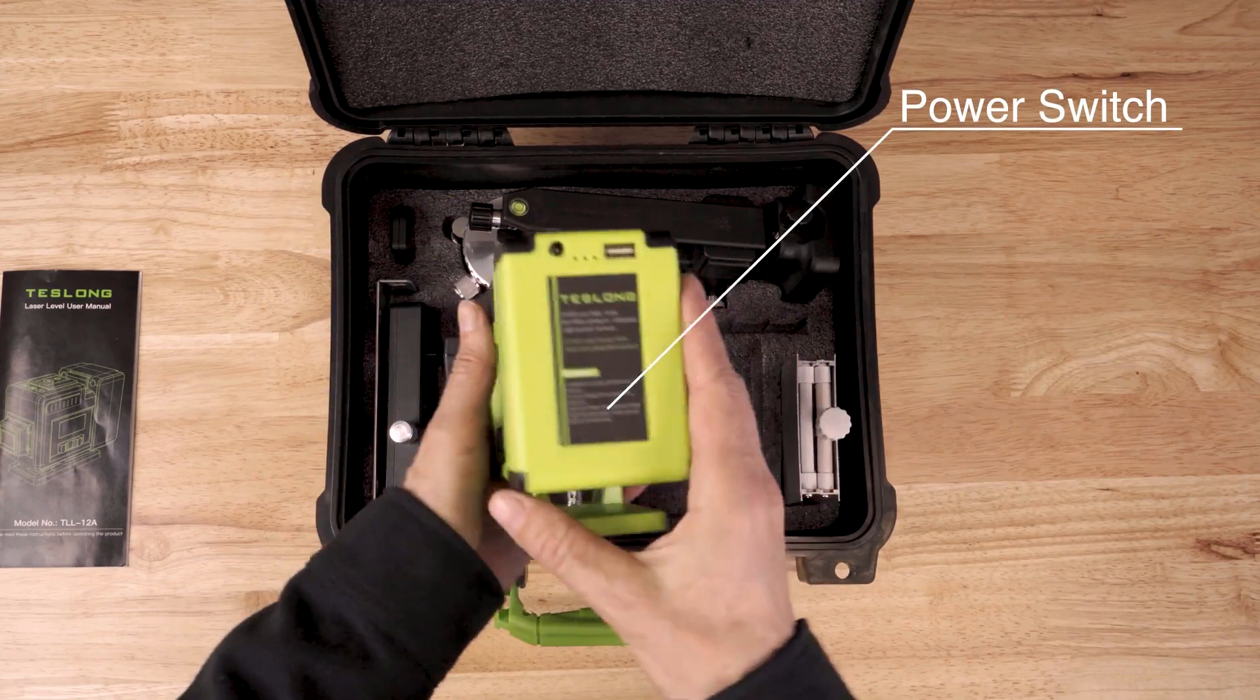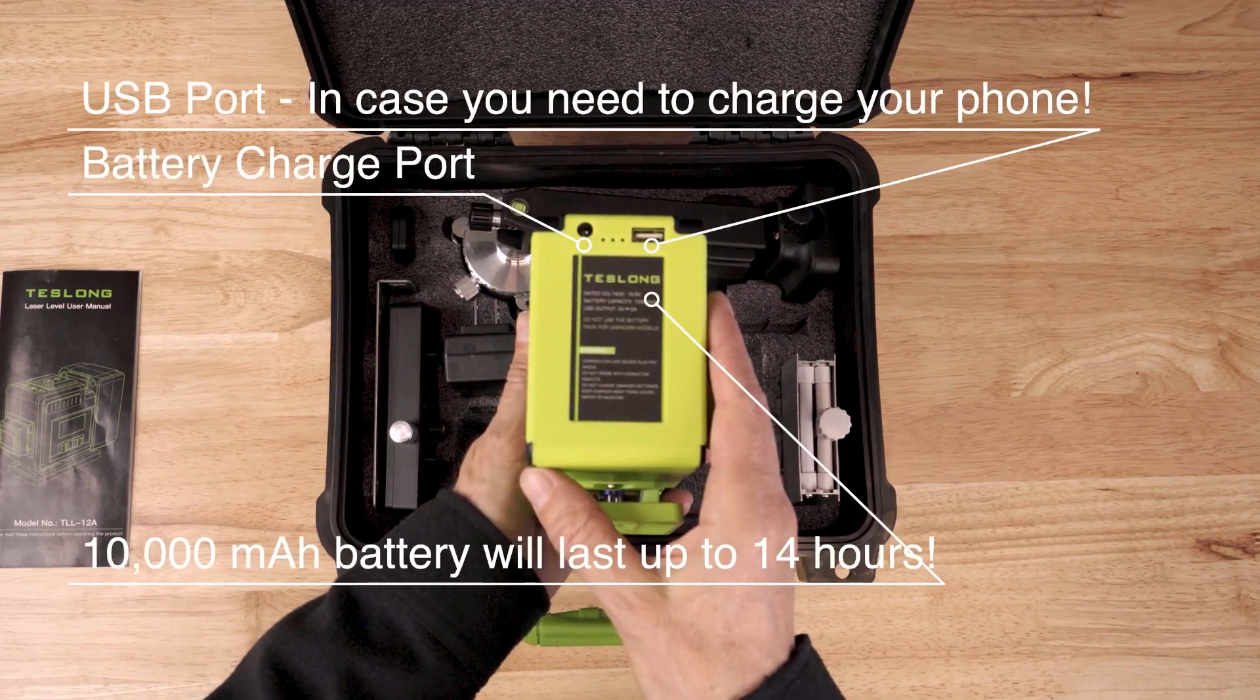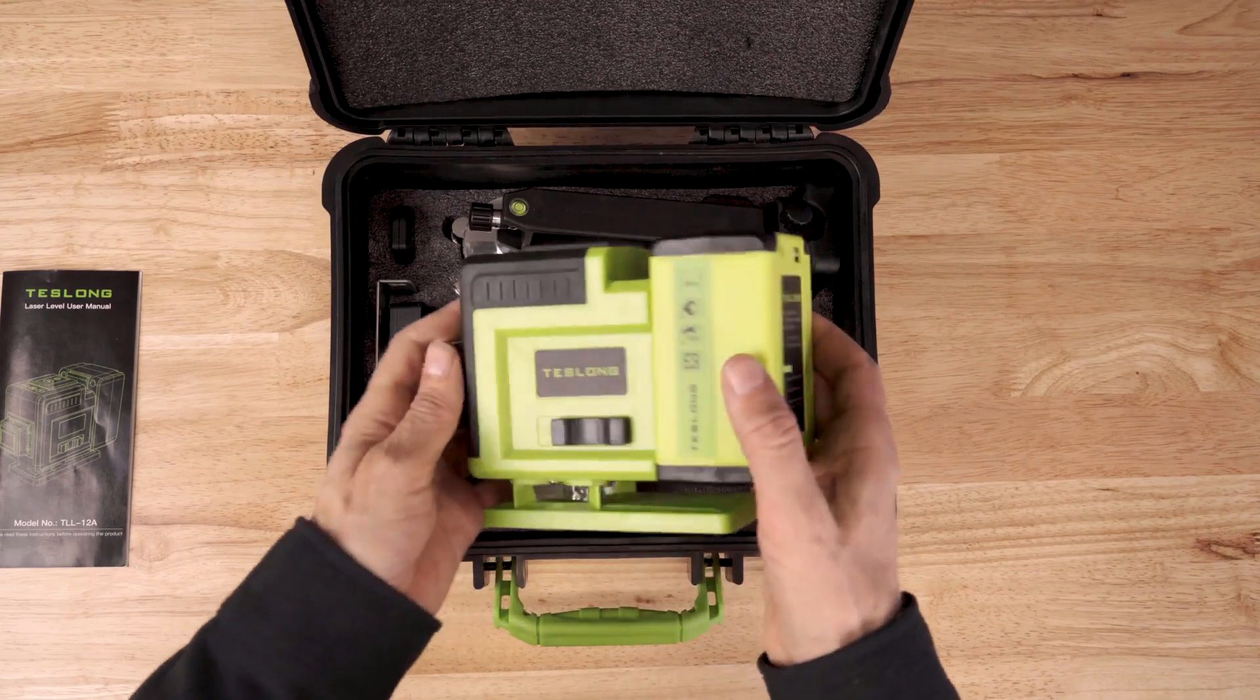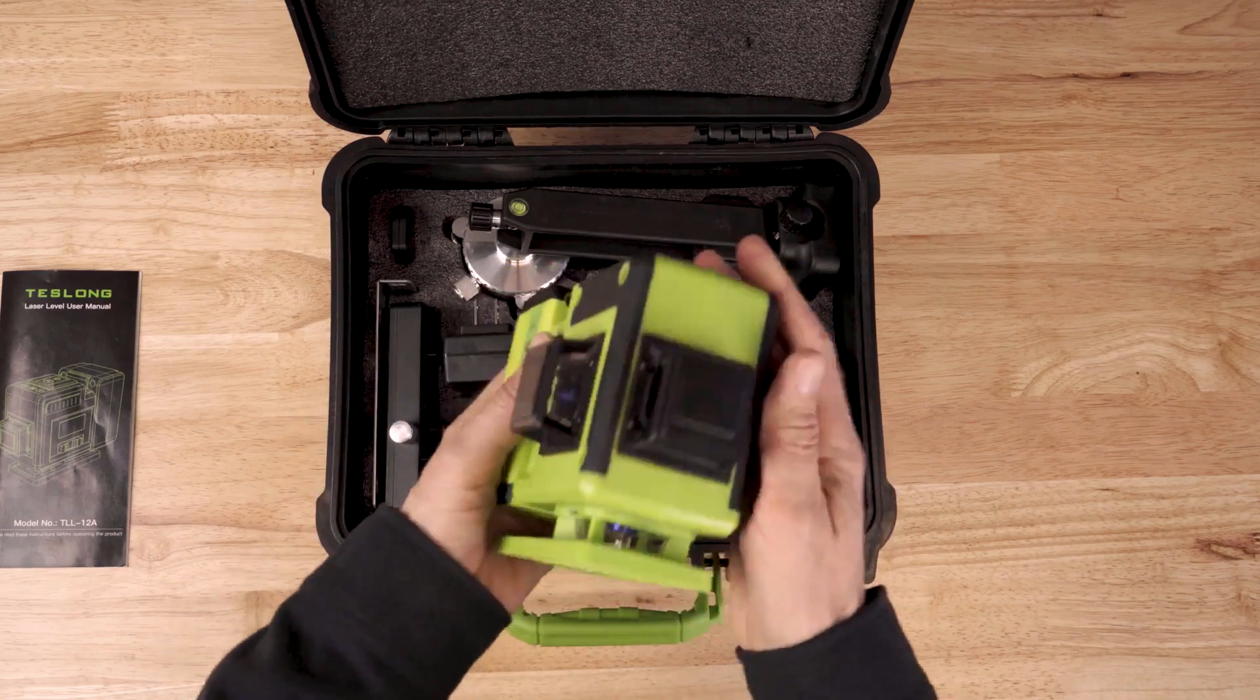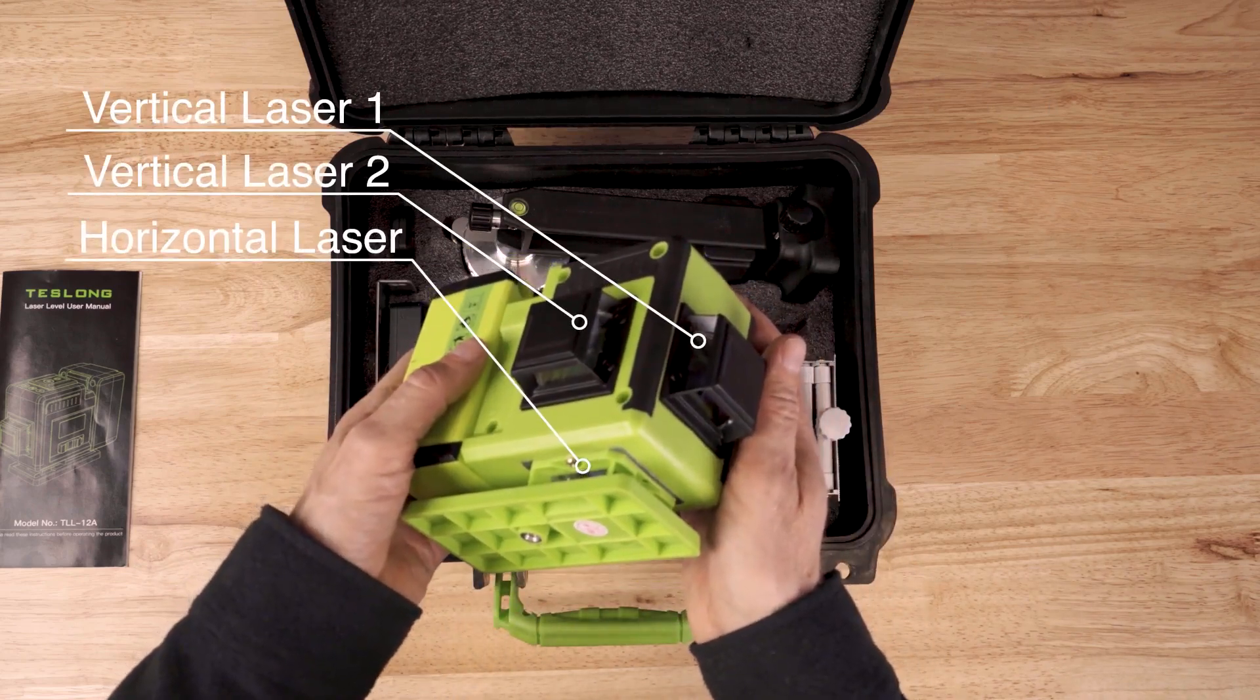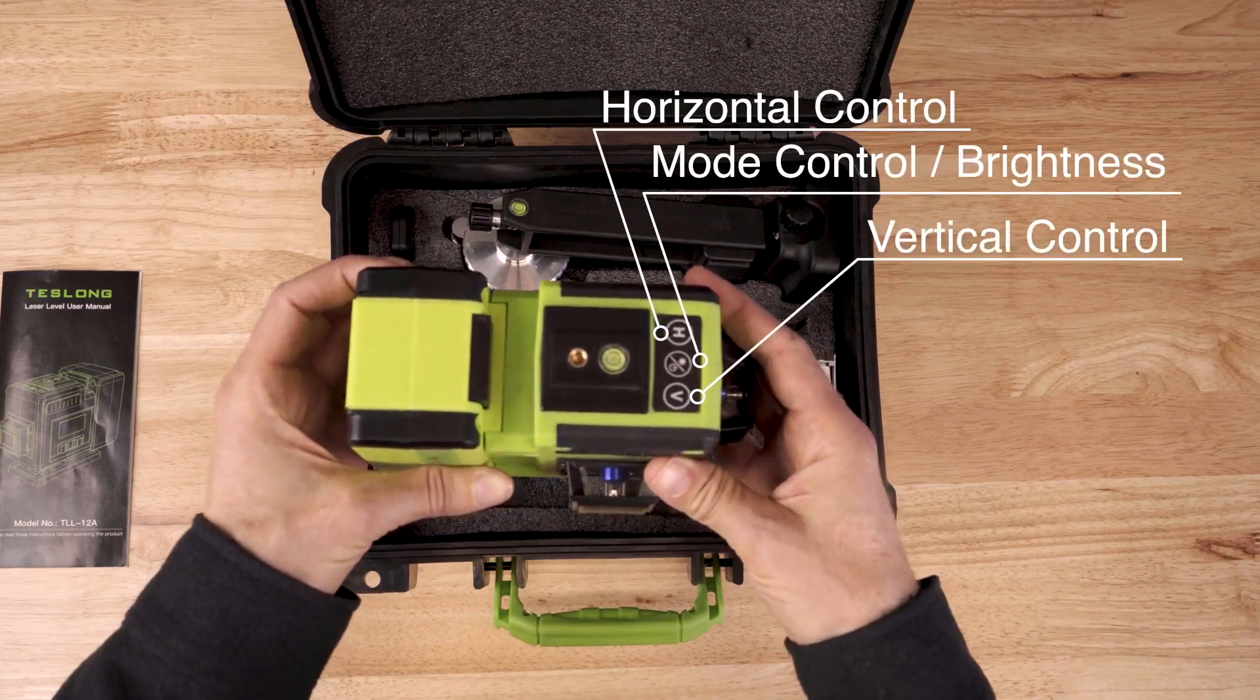There's the power switch, and let's look at some of the battery features. There are two vertical lasers and one horizontal laser. The main controls are on top of the device.